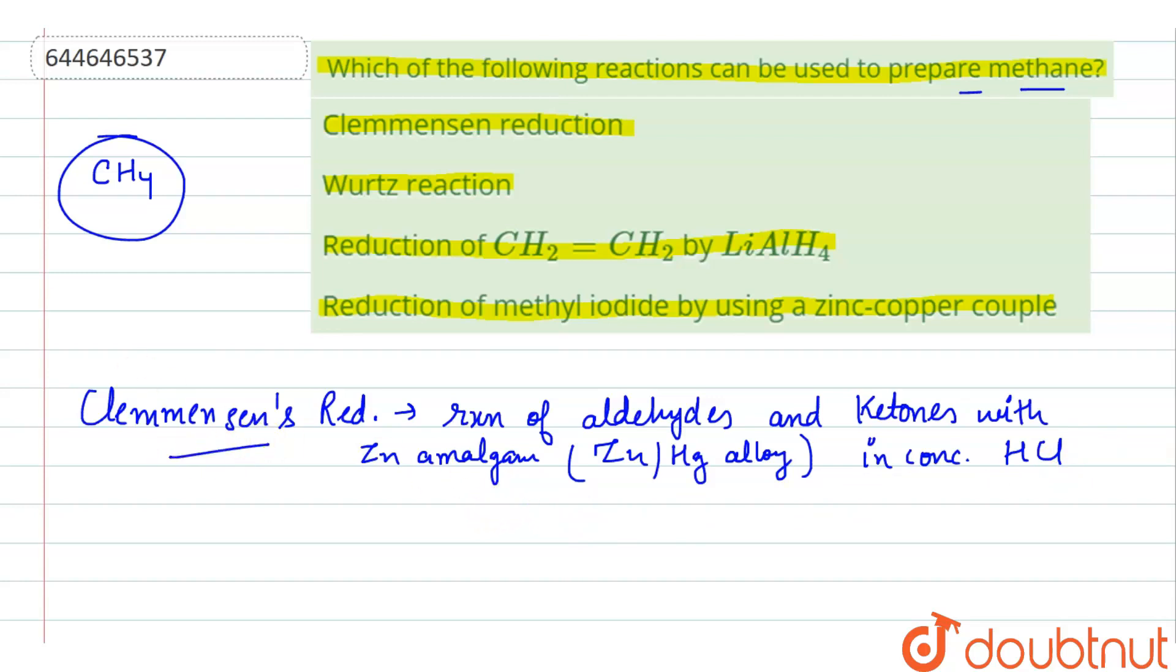If I see for this particular reduction, if I take a general case, the reaction is CH3-C double bond O. This is basically a ketone with a 3-carbon atom, that is propanone.